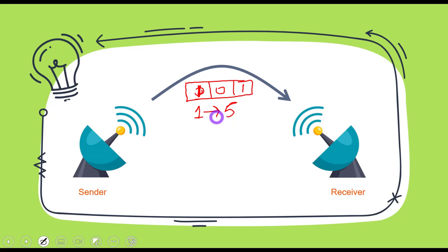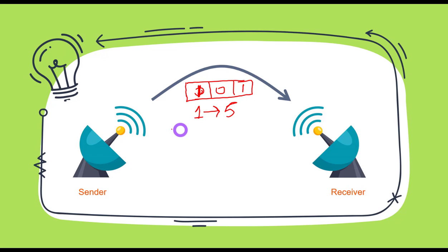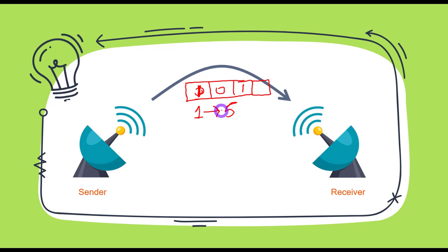So due to the error of one bit, my number changed. The value changed from one to five. We don't want that. So what we do is we keep an extra bit, which we call a parity bit. We have two types of parities: even parity and odd parity.